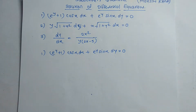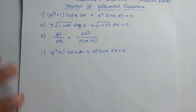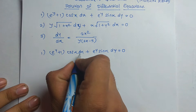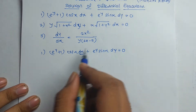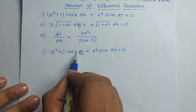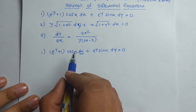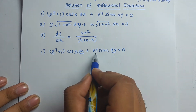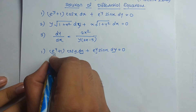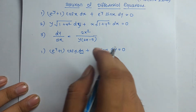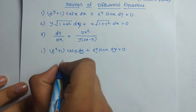This is an equation of the variable separable form. We have to separate the variables — where dx is present we want terms of x only, and where dy is present we want terms of y only. So I move (e^y + 1) to one side and separate it out.